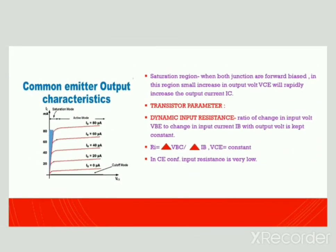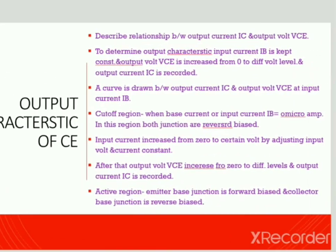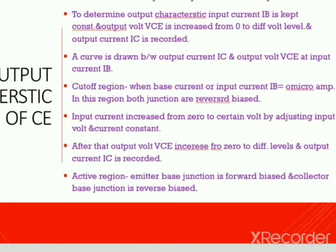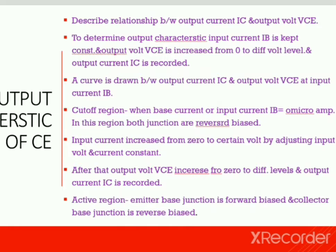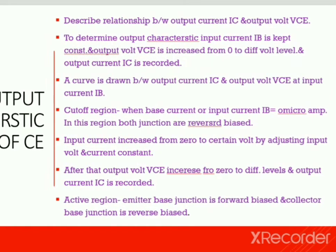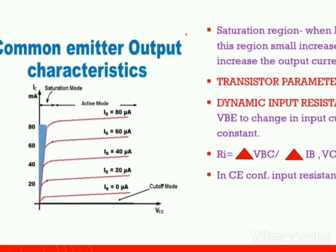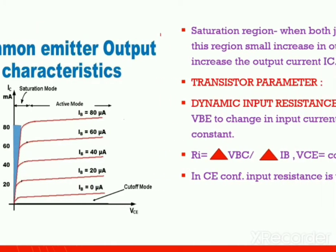In the cutoff region, when base current IB is equal to 0 microamperes, both junctions are reverse biased. Input current IB is then increased from 0 microamperes to 20 microamperes by adjusting input voltage VBE, and kept constant. Output voltage VCE is increased from 0 to different voltage levels, and for each level the output current IC is recorded. A curve is drawn between IC and VCE at constant IB — this is the active region of the transistor.